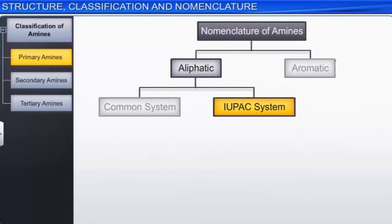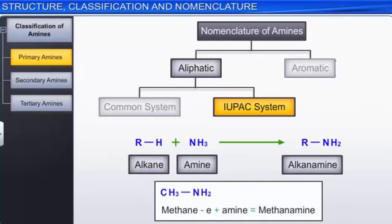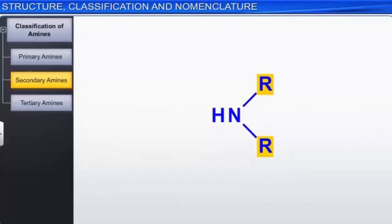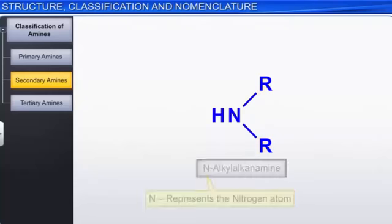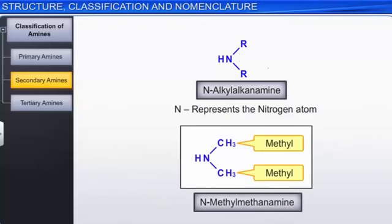In the IUPAC system, alkyl amines are named as alkanamines. The name is derived by replacement of the final 'e' of the alkane by the word amine. For example, CH₃NH₂ is named methanamine. Secondary amines with the same alkyl groups are named N-alkyl alkanamines, where N represents the nitrogen atom and should therefore be capitalized. For example, this secondary amine with two methyl groups is named N-methyl methanamine.